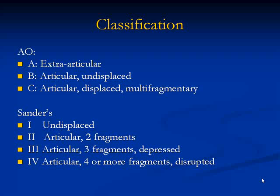Two commonly used classifications: the AO classification — Type A is extraarticular, Type B is articular undisplaced, and Type C, the worst, is the articular displaced multifragmentary fracture. The Sanders classification is also in common use: Type 1 is undisplaced; Types 2, 3, and 4 are articular fractures with 2, 3, and 4 fragments respectively.